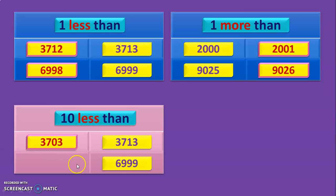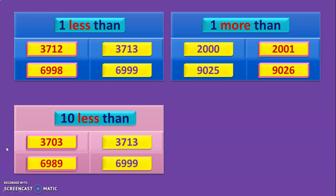The number given here is 6,999 and we want 10 less than this number. We will have to look at the 10s place — the 1s place will have no change — and we will have to do a subtraction because the keyword is 'less'. So we subtract 1 from the 10s place. What is 9 minus 1? It is 8. So 10 less than 6,999 is 6,989.